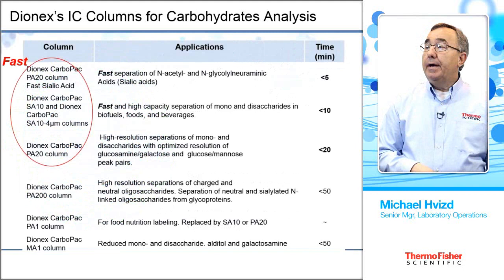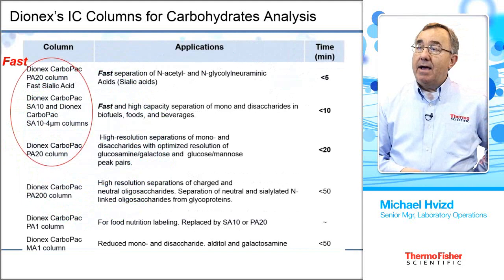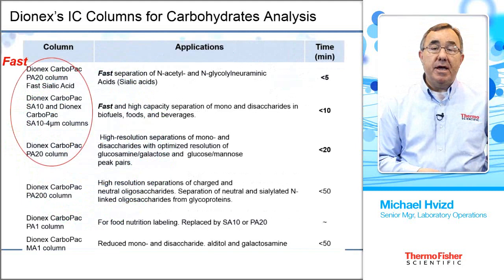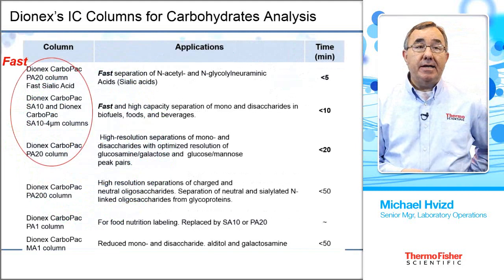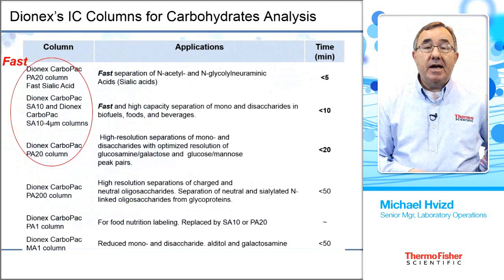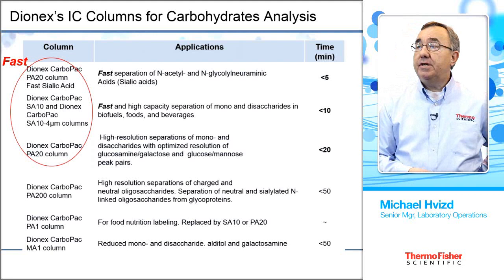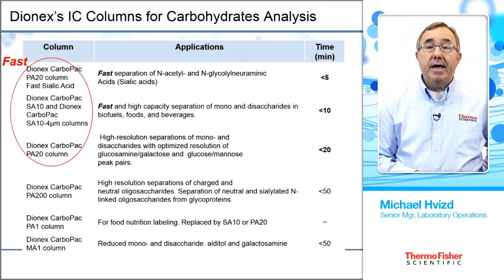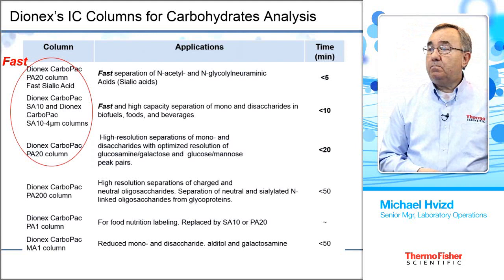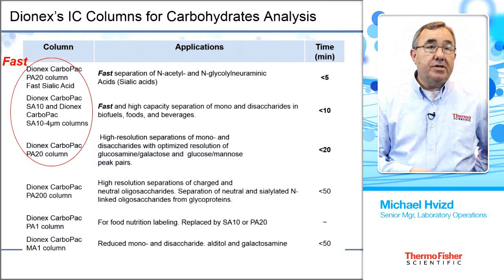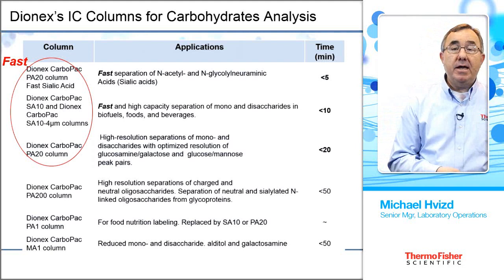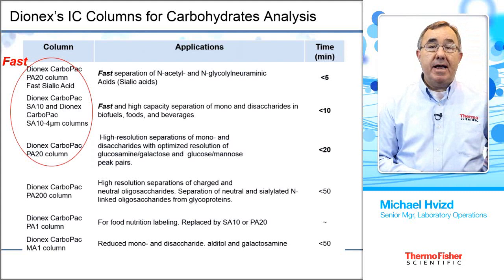Here's a chart of the columns we have available. The newer columns include the Carbopac PA20, which is very good for fast separation of sialic acids; the Carbopac SA10 and the Carbopac SA10-4 micron column, both good for mono- and disaccharide separations especially in biofuels, foods, and beverages. The standard Carbopac PA20 column gives high-resolution separations of mono- and disaccharides and optimum resolution for larger sugars. We also have the Carbopac PA200 for oligosaccharide separations, the Carbopac PA1 used in many standardized methods, and the Carbopac MA1, our high-capacity anion exchanger for sugar alcohols.